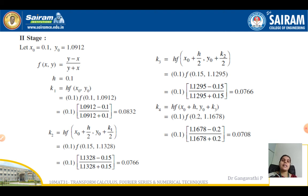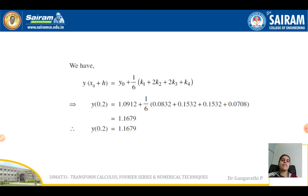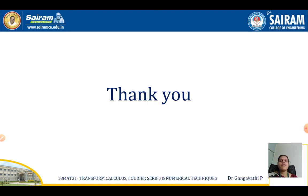For stage 2, the initial values come from stage 1: x₀ = 0.1 and y₀ = 1.0912. f(x, y) remains the same and h = 0.1. Evaluate k₁, k₂, k₃, k₄ using the same procedure, substitute all values into the final formula, and the answer is y(0.2) = 1.1679. Note that the values of stage 1 and stage 2 will not differ much — they vary only in the decimal places, so observe these values carefully before concluding. Always remember the formula carefully and be careful while evaluating in the calculator.